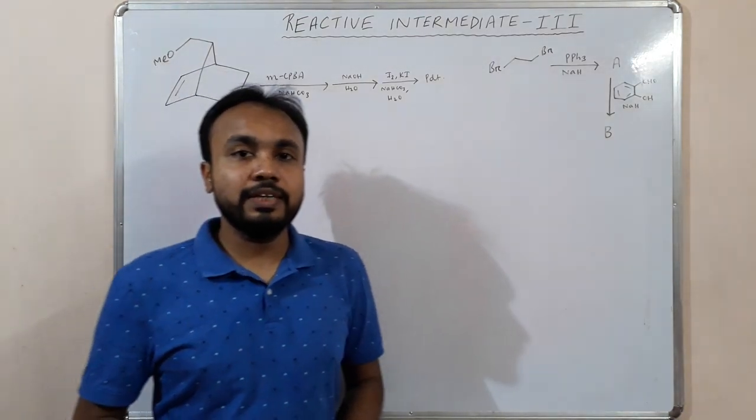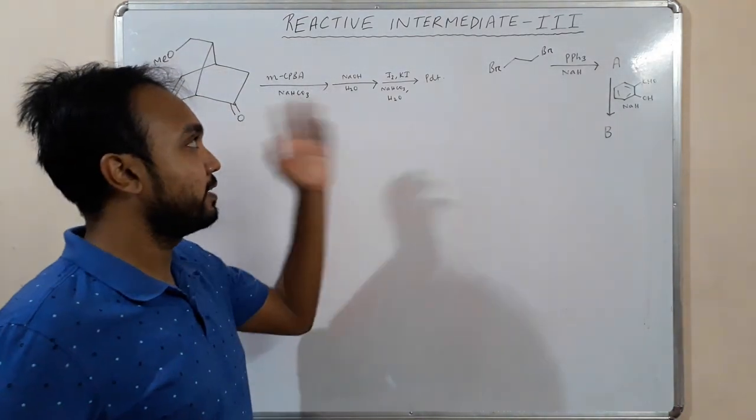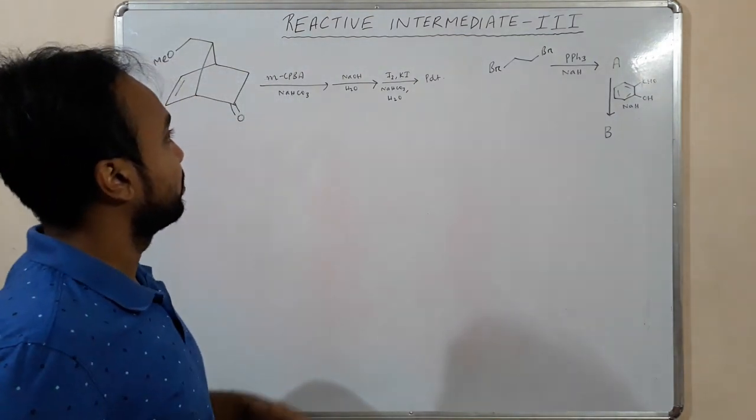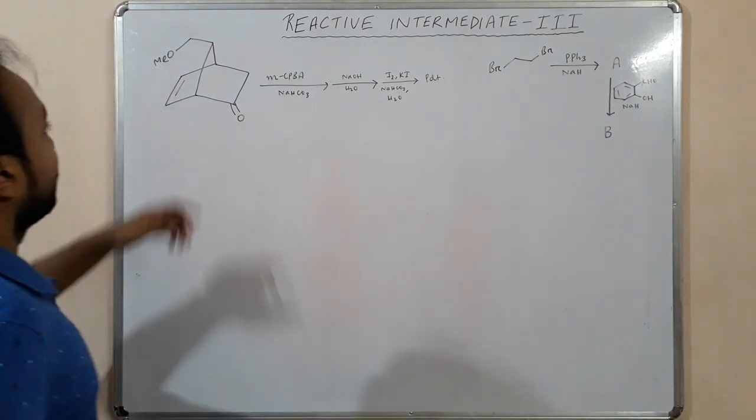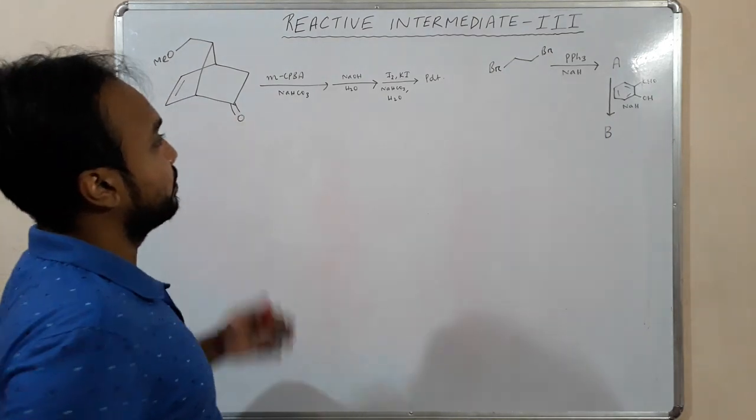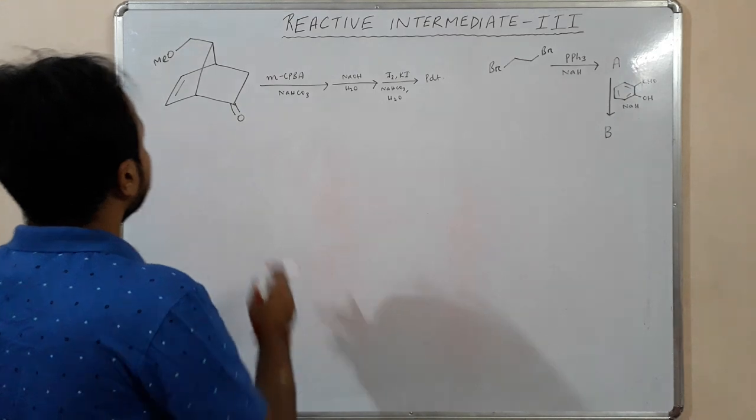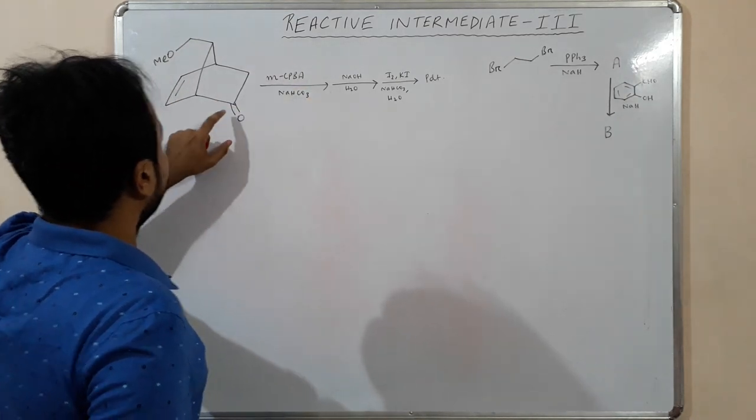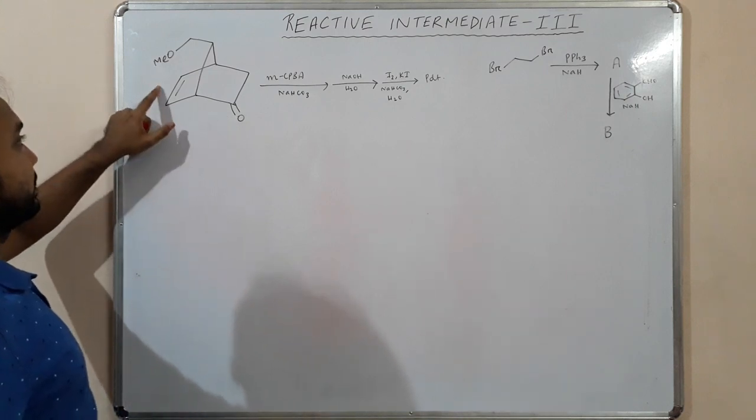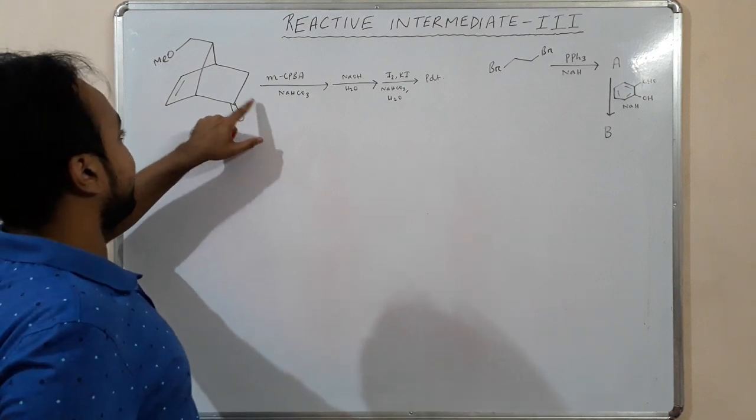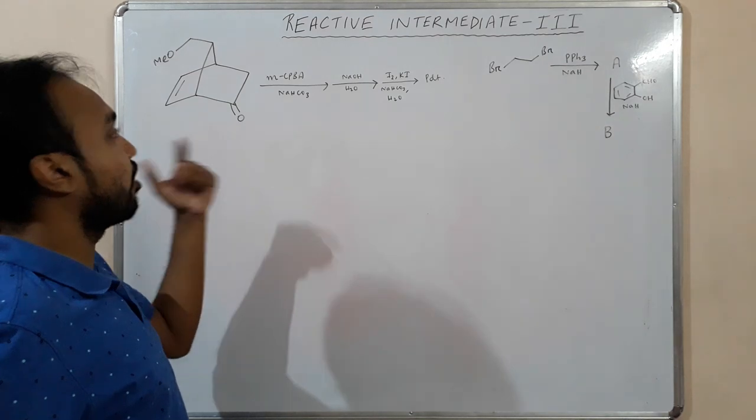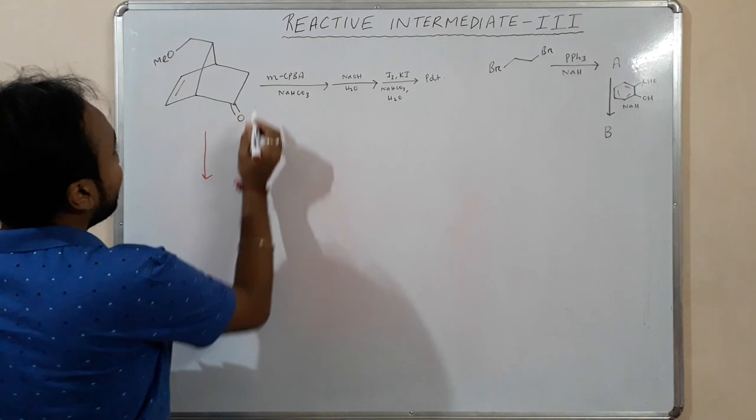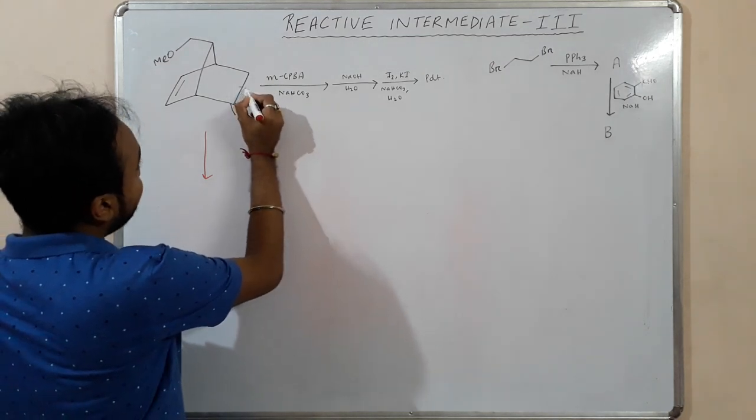Hello friends, let's continue with reactive intermediates. This is part three of my lecture. I'll start with these two problems. We have given MCPBA - that's meta-chloroperoxybenzoic acid. We have a keto and alkene, but if there is a keto, the possibility of Baeyer-Villiger is more. So it will undergo Baeyer-Villiger oxidation.